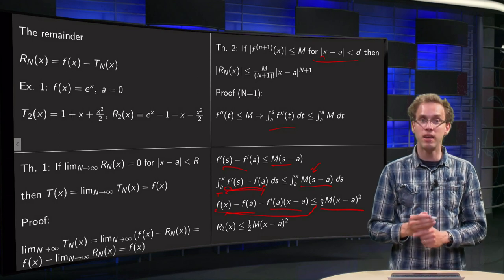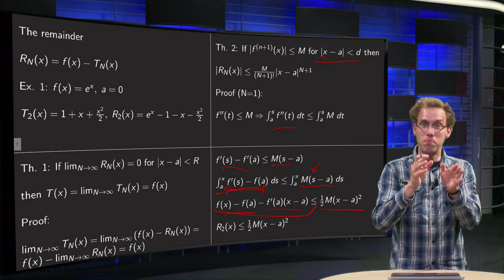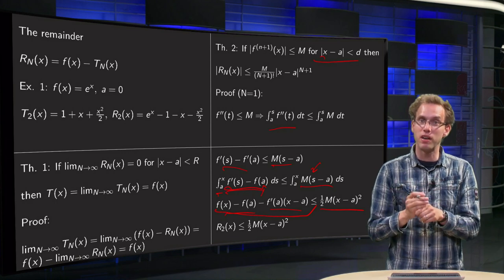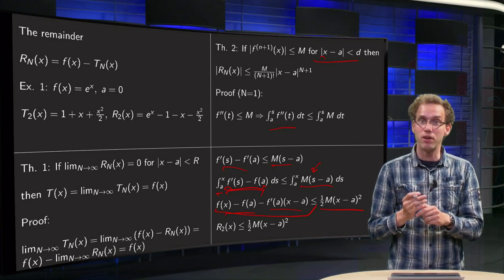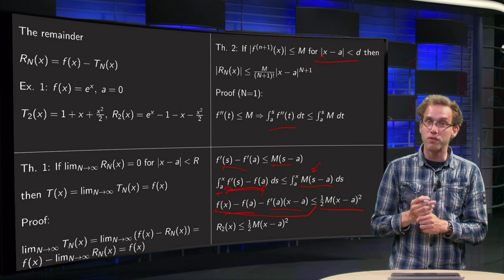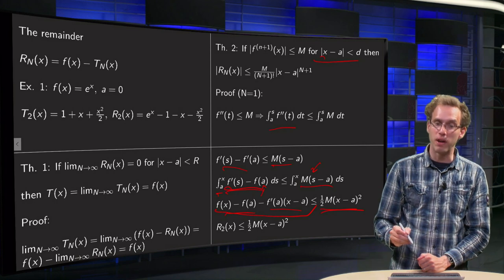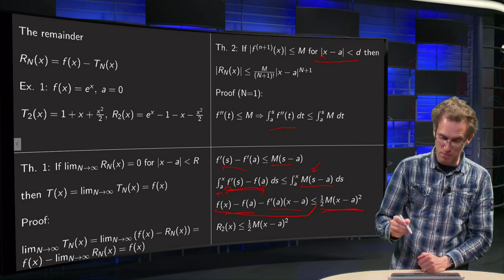And here we integrate with respect to s, the f of a is a constant, so that's nice. Gives us just the f prime of a times (x minus a). And on the upper boundary we integrate f prime of s with respect to s, so we get f of x minus f of a.